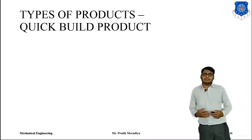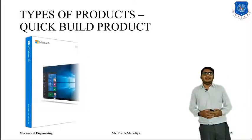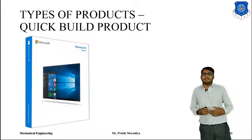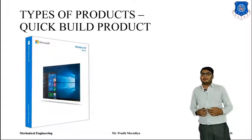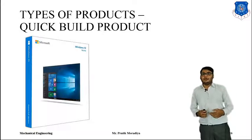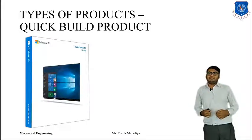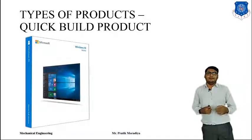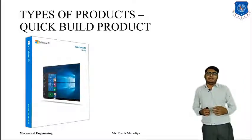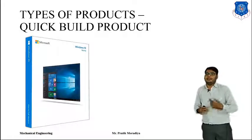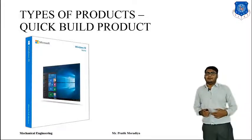Lastly, there are quick build products — products which can be built and iterated very easily and tested very iteratively. For example, software for mobile applications or the operating system of a PC. You can make changes to the operating system very quickly — change two or five lines of code and test it very quickly and iteratively. These products are known as quick build products.